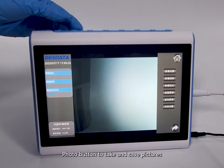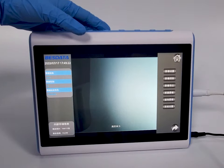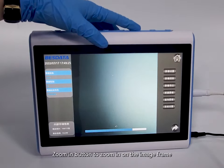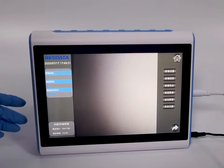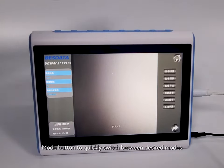Photo button to take and save pictures. Zoom in button to zoom in on the image frame. White balance button restores color. Mode button to quickly switch between desired modes.